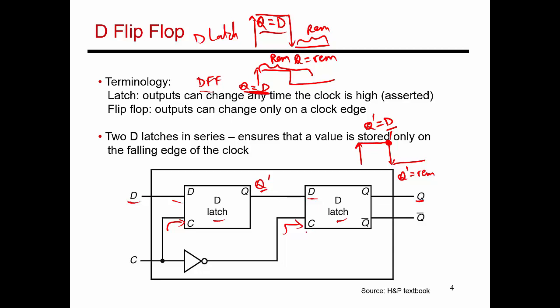During that second half cycle, the clock to the second latch is actually high, because the input clock which is currently in its low state has been inverted. So right now the clock input to the second latch is actually high. At this point, the value of Q is going to be whatever its input is, which is Q'. And we know that Q' is not going to change during this half cycle. Then sometime later the clock goes high again — that means the first D latch sees a low clock, so it is going to be in a remember state. The value of Q' is going to be whatever it had last seen, which was the value of Q' as it was set at that earlier moment. So starting from that point, the value of output Q is going to equal Q', which is nothing but the value of D at that moment.